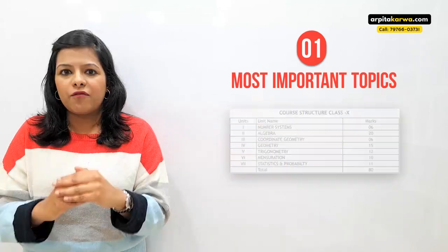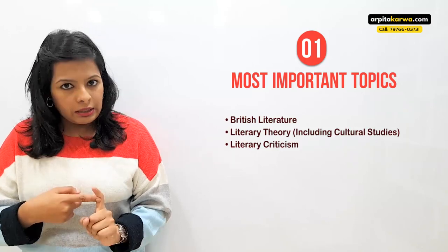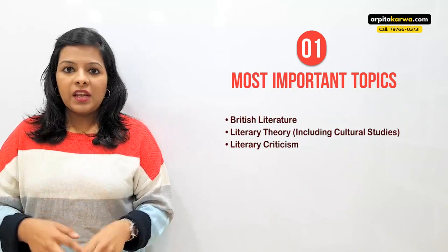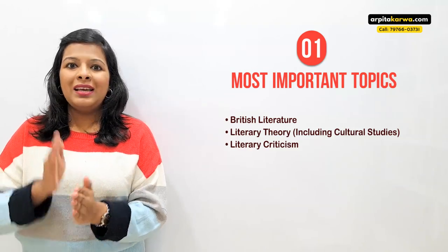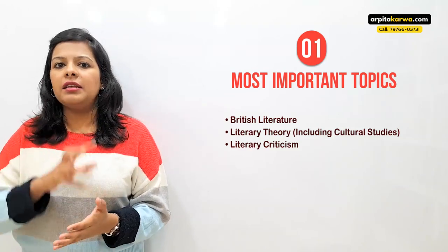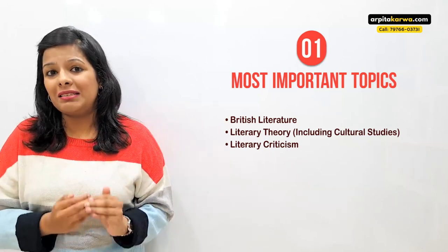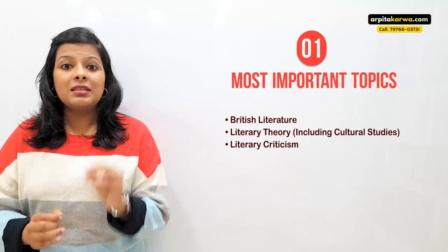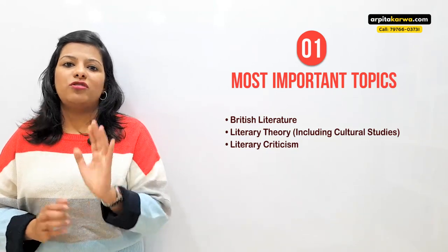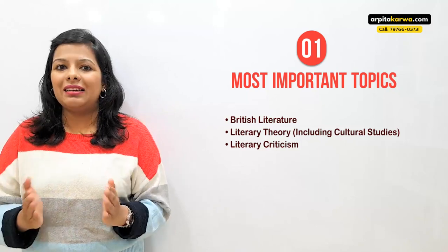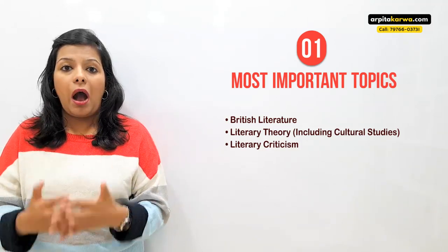The three most important sections which you should never skip are: British literature, literary theory, and literary criticism. If you look at the past two to three years of papers, they have been designed in a manner that a person with strong command over all three topics can score seventy to eighty percent of questions correctly — which is great. You focus on three units and get seventy to eighty percent marks to clear this exam.